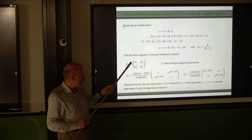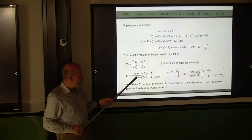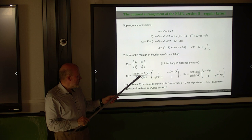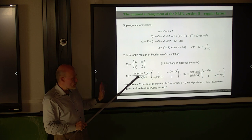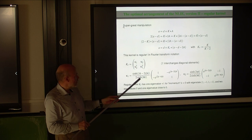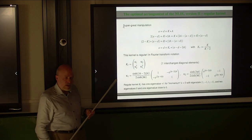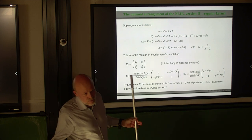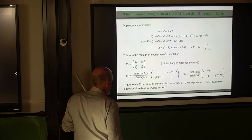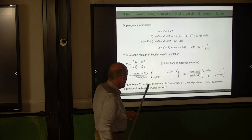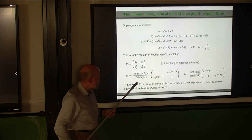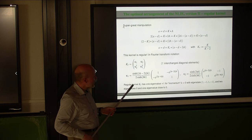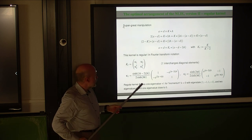This regular kernel K_r has the same block structure as before, but the pre-factors are now absolutely regular functions — ratios of hyperbolic sines. That means for k → 0 there is no problem, and for k → ±∞ it goes to zero.